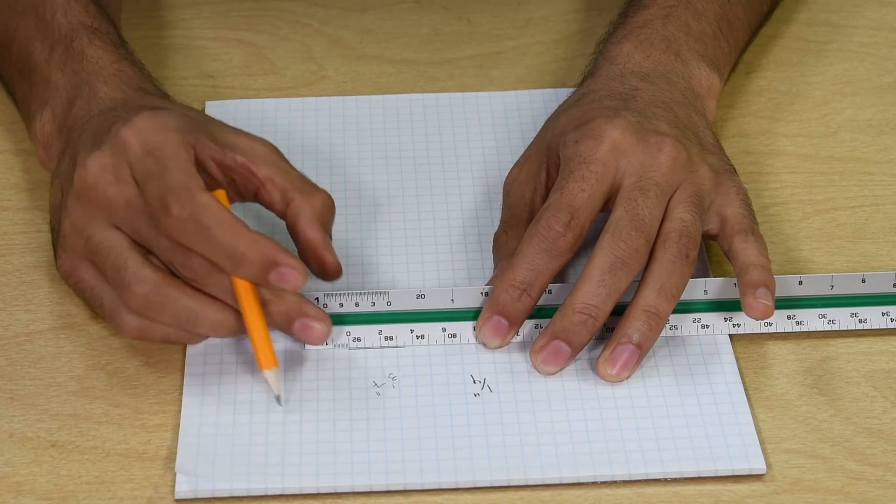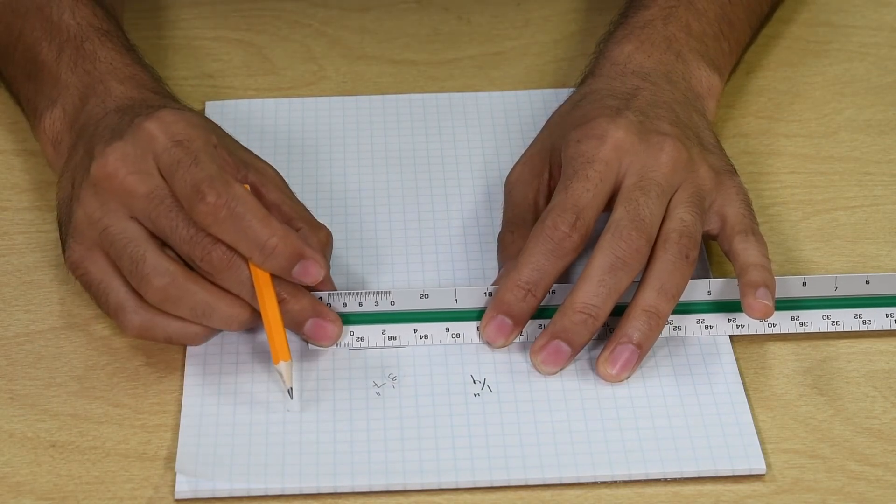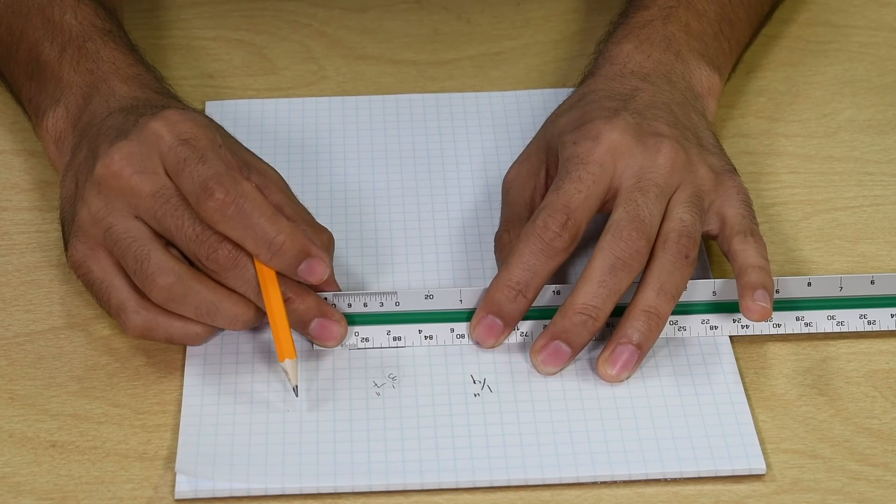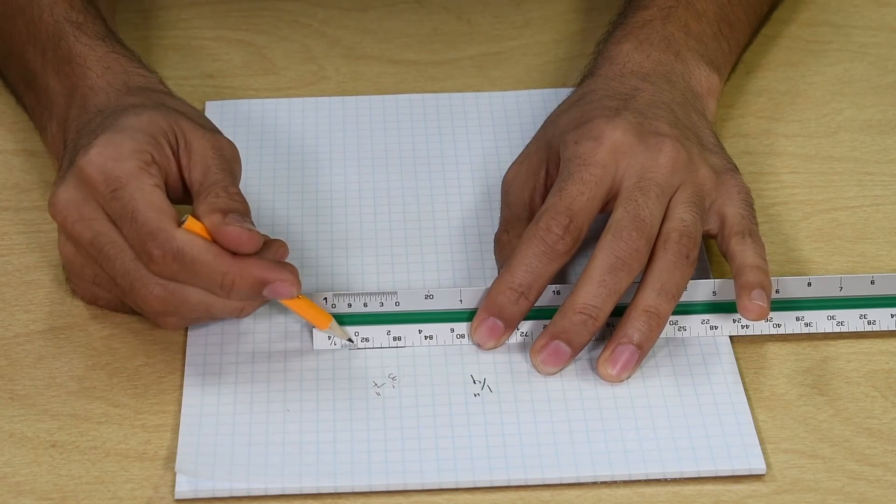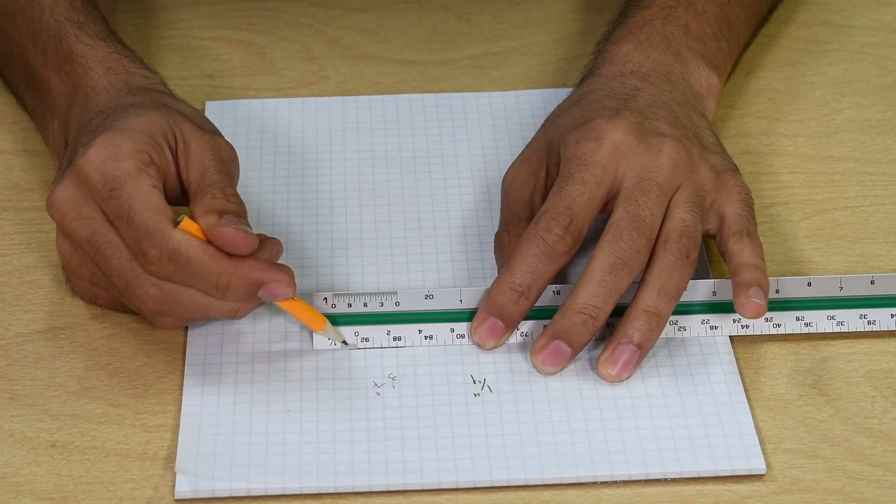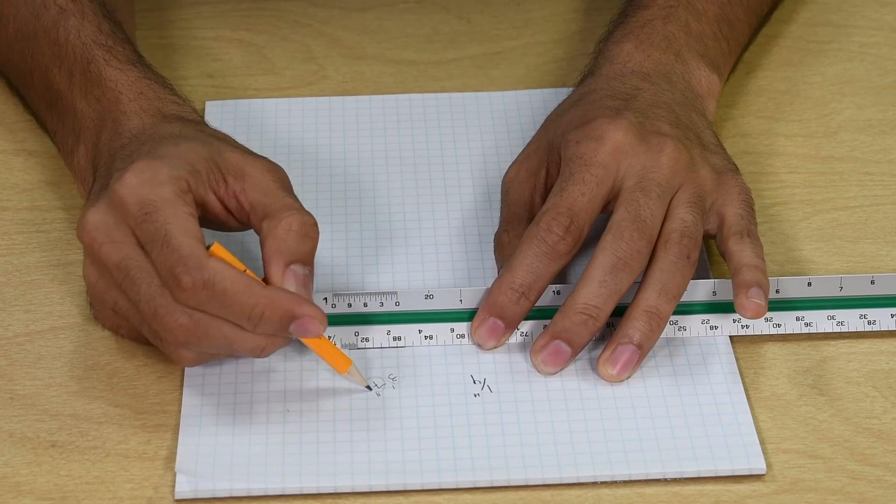Then to measure the fraction you slide the ruler over to the last whole foot. Now you measure the inches. So the measurement in this example is three feet and seven inches.